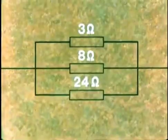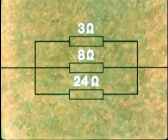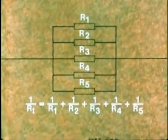You can calculate RT in this way for any number of resistances in parallel. For 5 resistances, say, the formula would be 1 over RT equals 1 over R1 plus 1 over R2 plus 1 over R3 plus 1 over R4 plus 1 over R5, and so on.